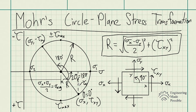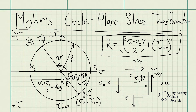Mohr's circle simplifies the plane stress transformation. Instead of relying on numerous equations, you just work with a circle and apply trig functions to solve for the principal stresses, maximum shear stress, and angles. You only need to memorize the radius equation; everything else follows from basic trigonometry.